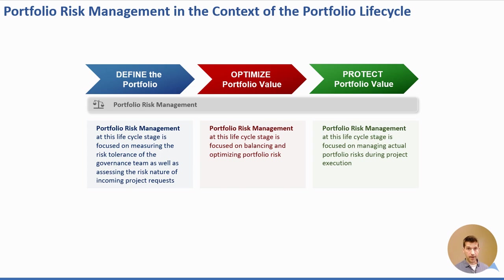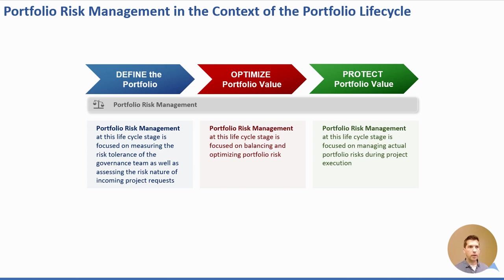In the define phase, we're defining the composition of the portfolio by selecting good projects, but we're also defining the parameters of the portfolio, including the level of risk we're willing to have in the portfolio. And then, when we optimize the portfolio, we want to maximize project value, and therefore portfolio value, taking into account the level of risk associated with it — or another way, we want to balance the risk in the portfolio.